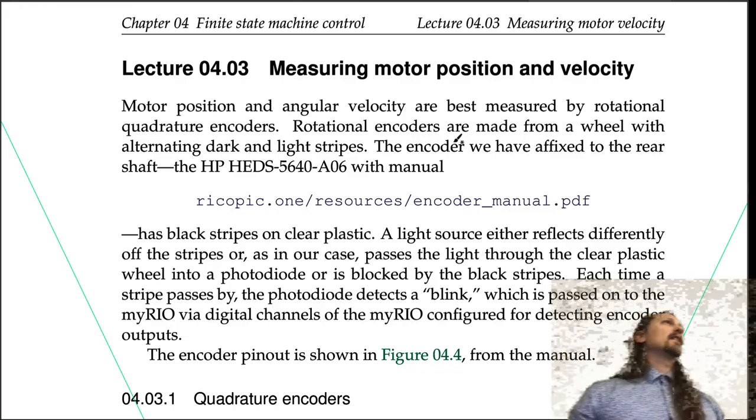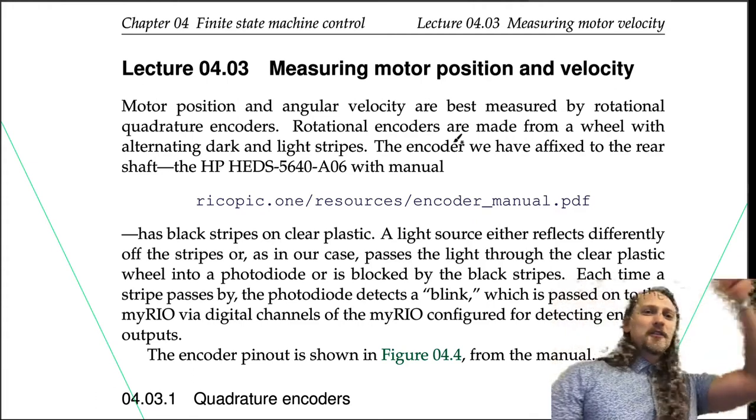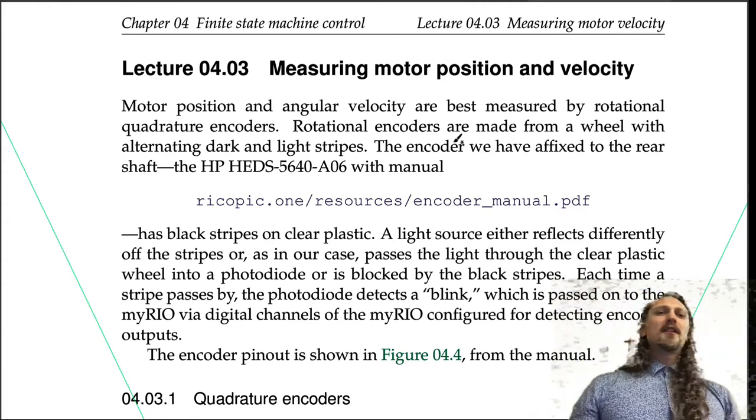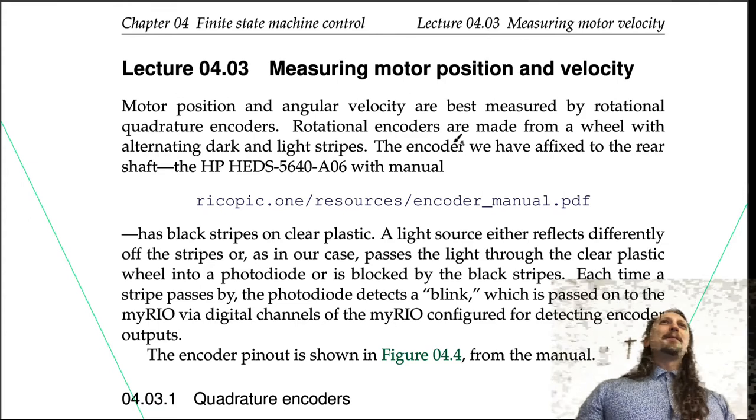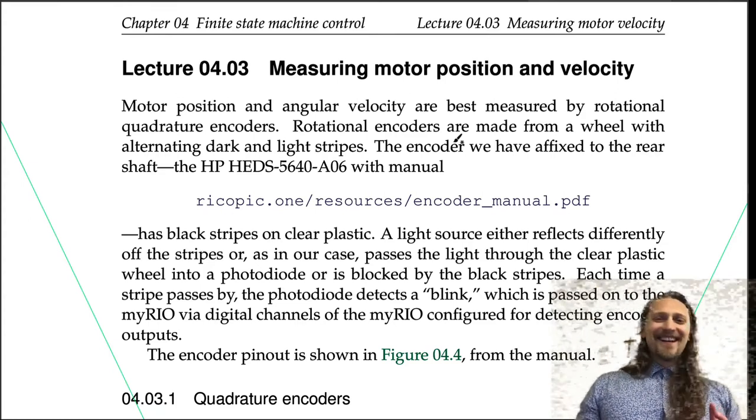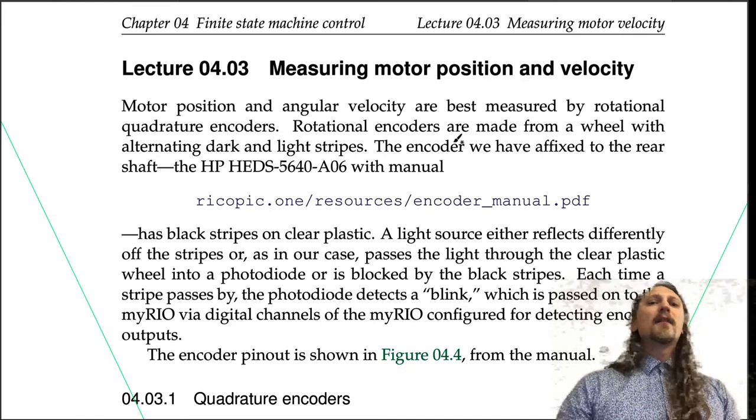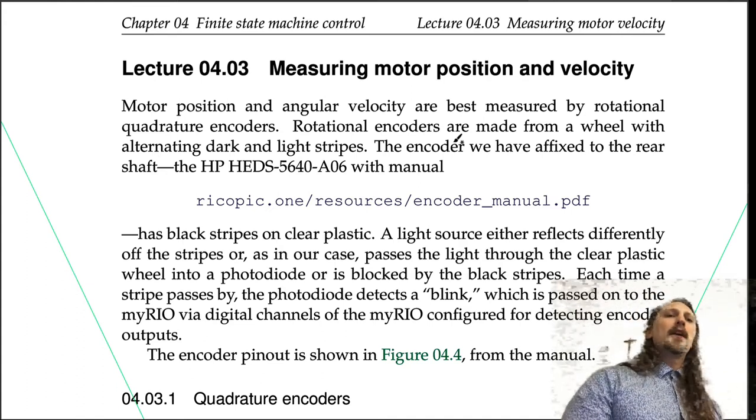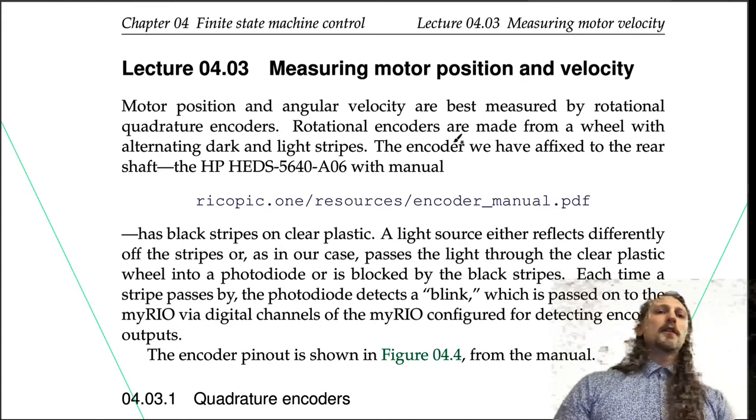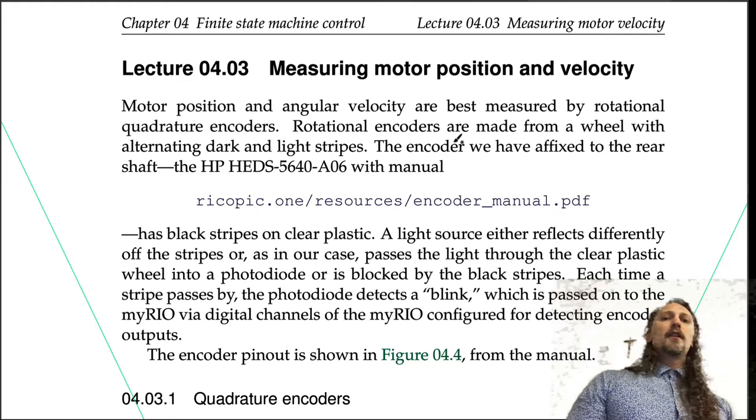This is a pseudo break. Okay, so lecture 4.3, measuring motor position and velocity. I woke you guys up with the clapping, didn't I? Motor position and angular velocity are best measured by rotational quadrature encoders.